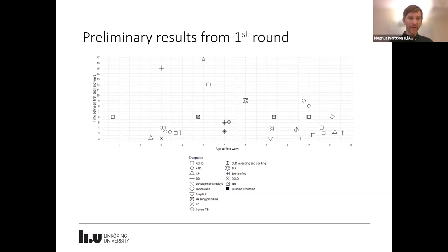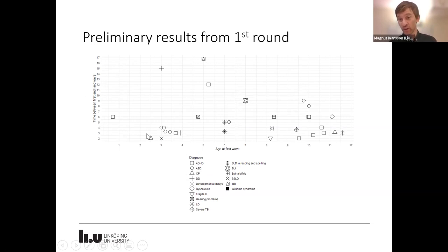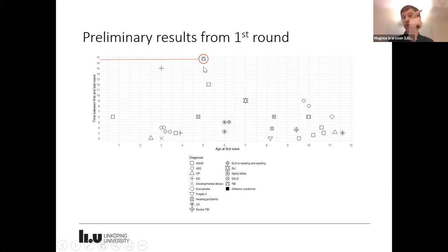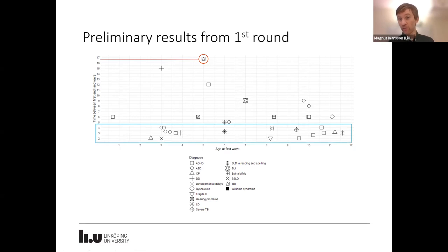I've added the time between first and last wave as a y-axis, just to show you there was quite a lot of variance in that variable as well. Looking at one study here, we had about six and a half years between the first and last data collection point. But in about half of the studies, the mean time between first and last was between two and four years.